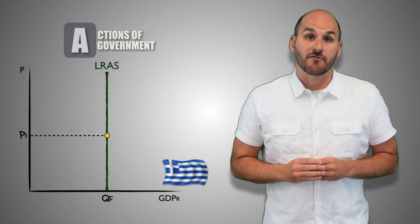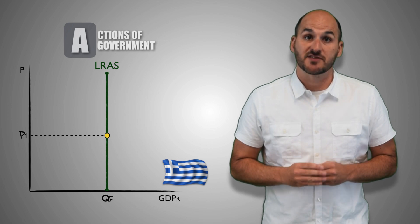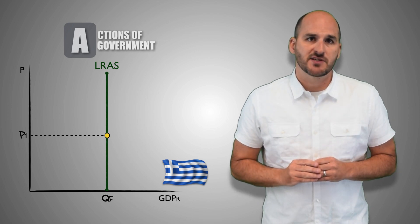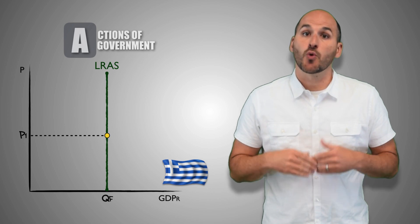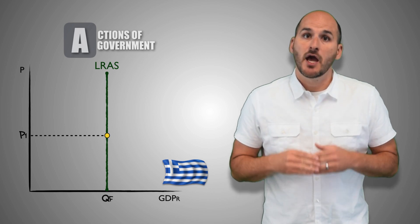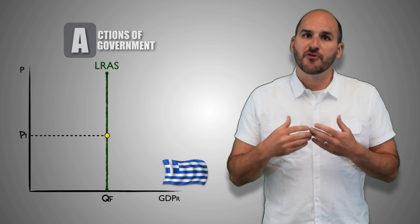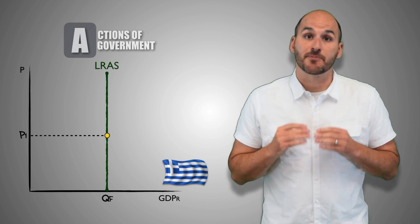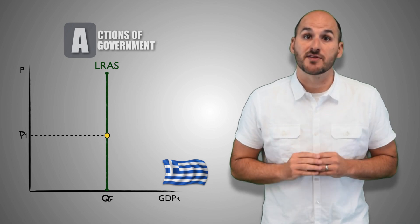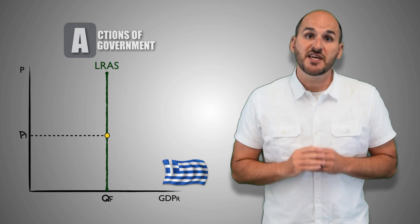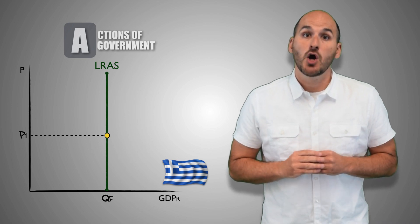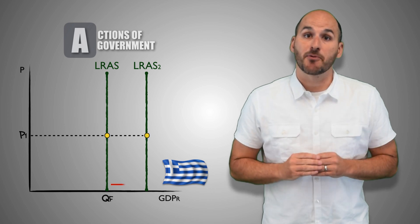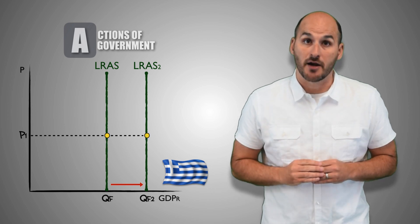Suppose that the Greek government decreases corporate profit taxes on domestic firms. Without the burden of paying higher tax rates, firms will scale production in order to earn higher profits. As more plants are built, they're filled with workers and capital, meaning that the capacity of the Greek economy to produce real GDP output will increase in the long-run. This decrease in corporate profit taxes will cause an increase in long-run aggregate supply and increase the production possibilities of the Greek economy.